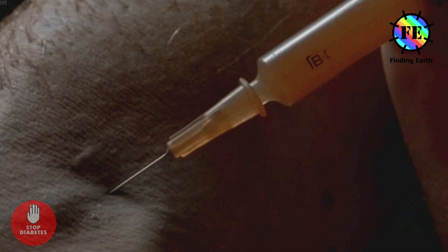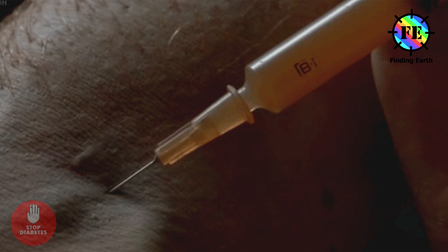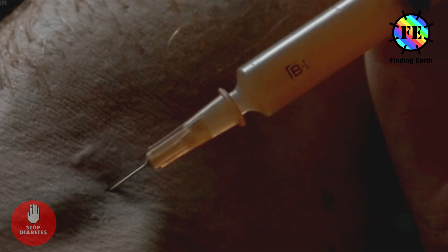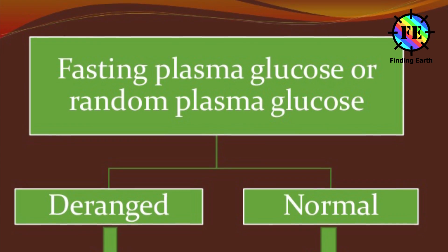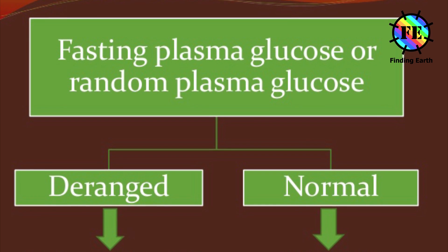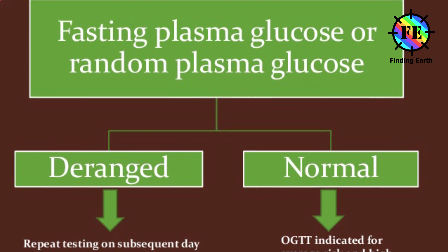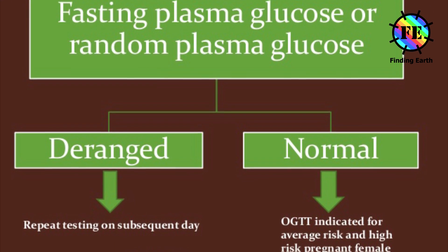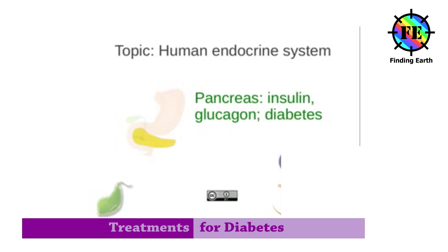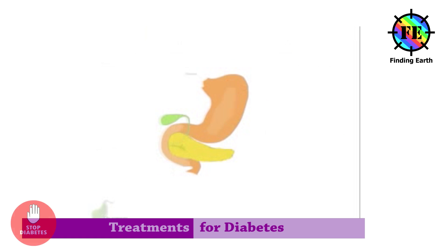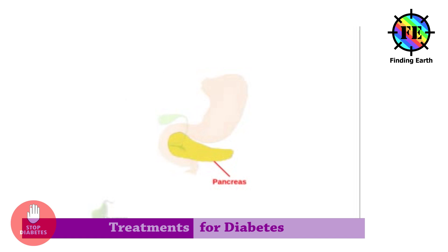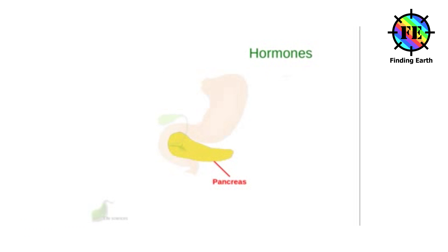An OGTT of 200 mg/dL or higher means diabetes. The Random Plasma Glucose Test is a blood check done any time of day when you have severe diabetes symptoms. Diabetes is diagnosed at a blood glucose of greater than or equal to 200 mg/dL.